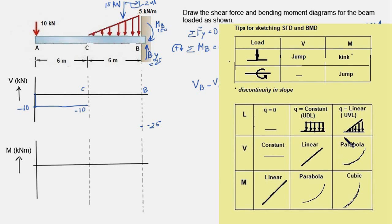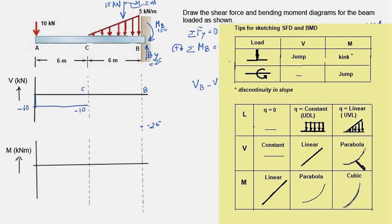Referring to the reference table: when the distributed load Q is linear, that is of the form k times x, the shear force curve is a parabola because integrating kx gives kx squared over 2. Further integrating gives kx cubed over 6, which is a cubic curve for the bending moment diagram. So with UVL, the shear force shows a parabola and the bending moment diagram shows a cubic curve.